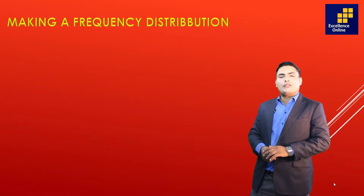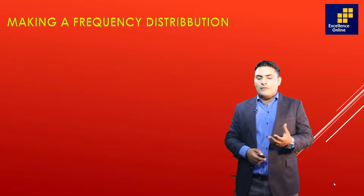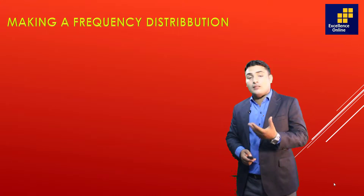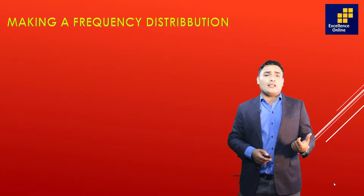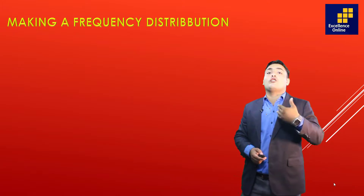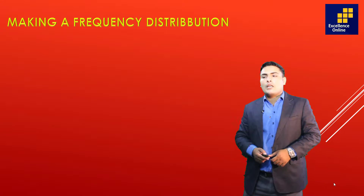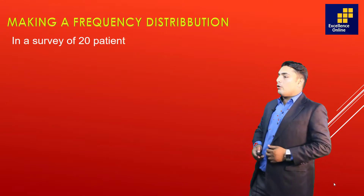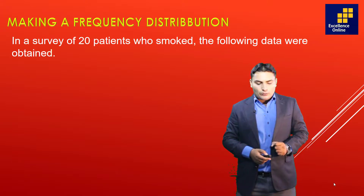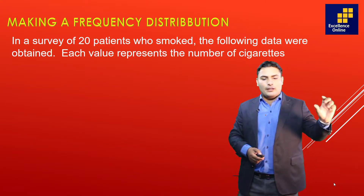We will learn how to make a Frequency Distribution. Basically, we will be given raw data from research and surveys. If we organize the results into an organized form, then we present the frequency distribution. For our screen, there is a question: there is a survey of 20 patients who are smoking. When we collected data, we listed 20 values.